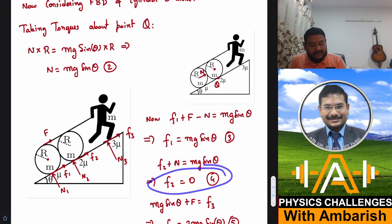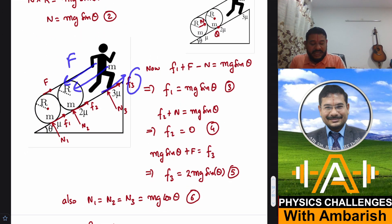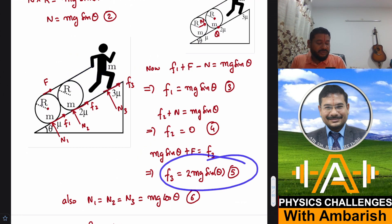Now I can talk about the man. On the man there's capital F acting here, F3 is the friction, and mg sin θ. So mg sin θ plus capital F equals F3, which gives F3 equals 2mg sin θ. And as I told you, normal reaction is also mg cos θ for all three.